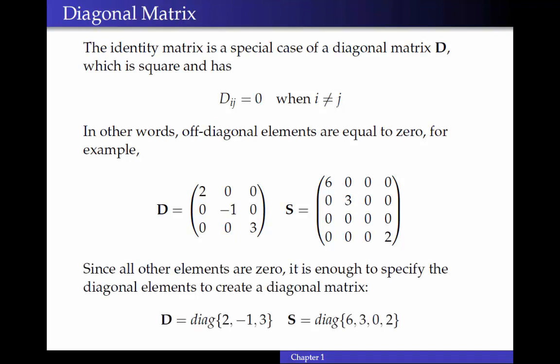And since all those other elements are zero, to specify enough information to create the diagonal matrix, all we need to do is list those diagonal elements. So in software, or otherwise, we can shorten the writing of this matrix and simply write that it's a diagonal matrix with diagonal elements as listed. And so this is actually the code that will be used to create diagonal matrices.